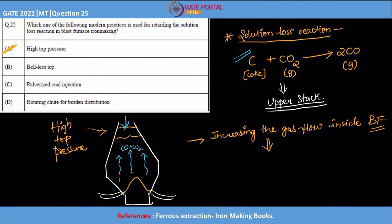Bell-less top is used for even charge distribution. Pulverized coal injection is used to reduce the costs or reduce the coke consumption. Rotating chute is again for proper even distribution throughout all the rings of the blast furnace. So high top pressure is the main modern practice in order to control this solution loss reaction and in order to control the coke rate in a particular blast furnace.